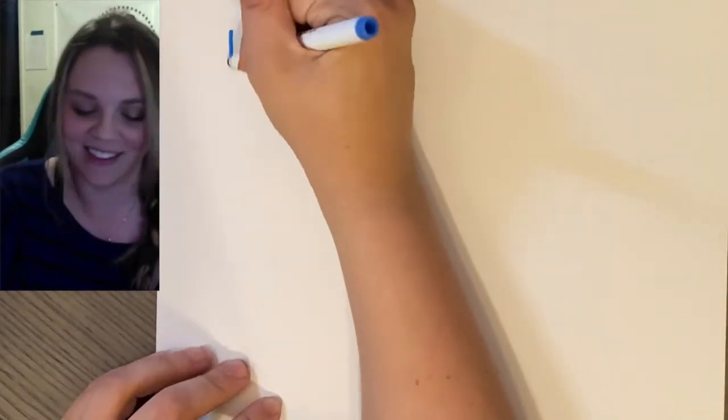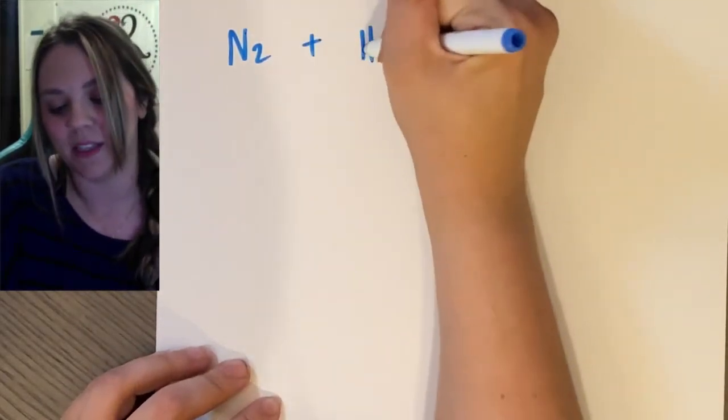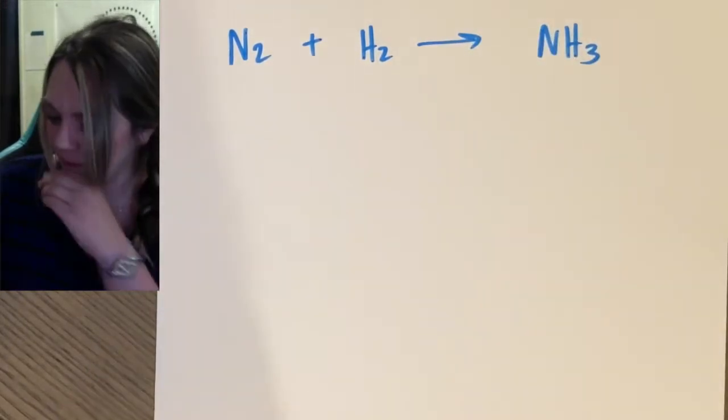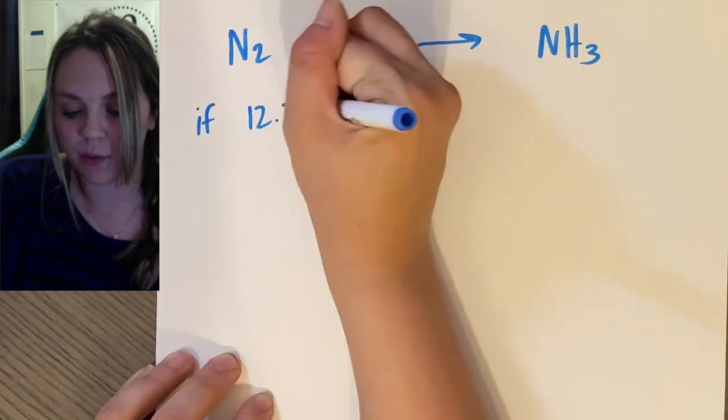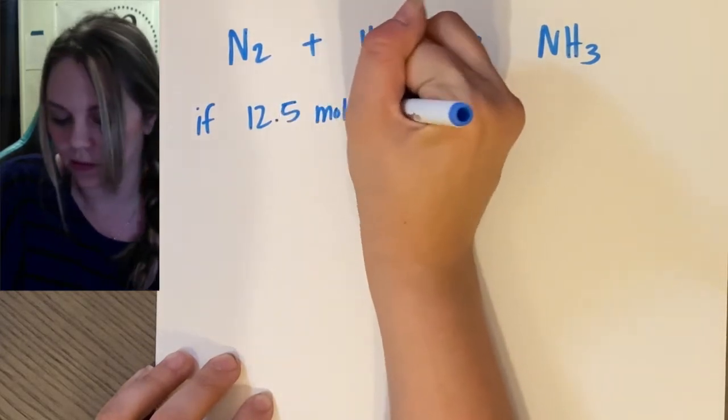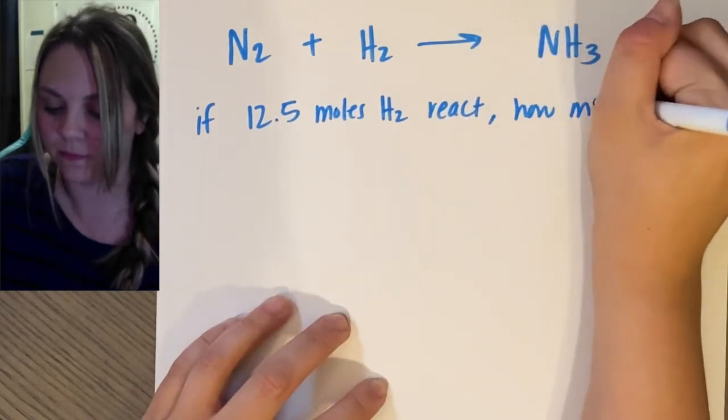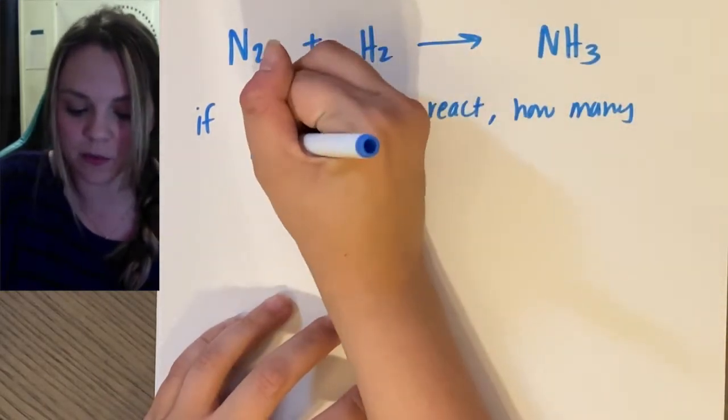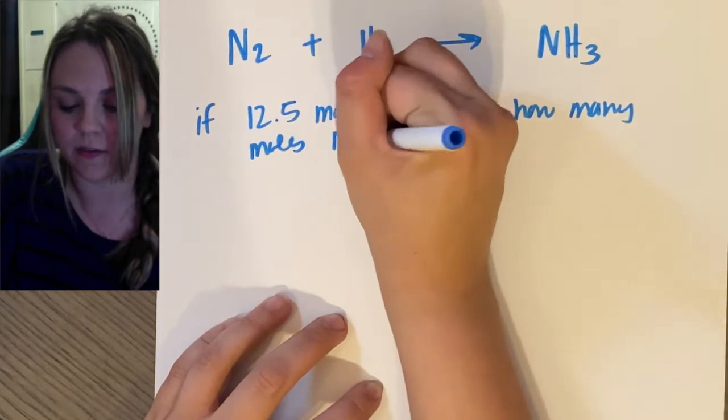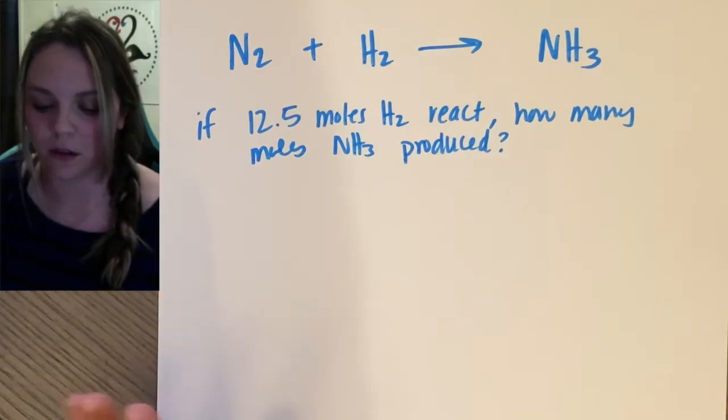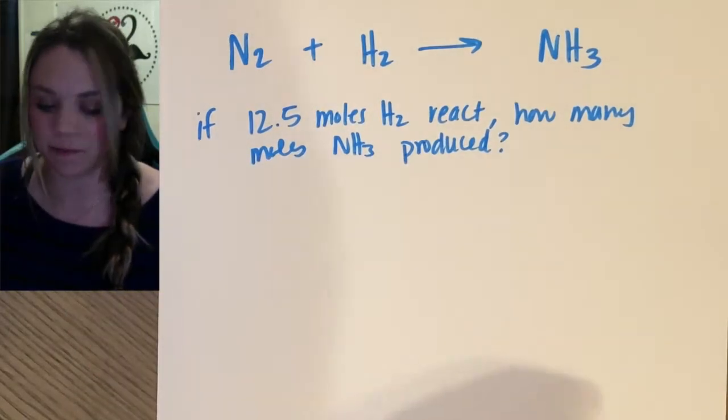So we use my favorite equation because it's easy. N2 plus H2 reacts to make NH3. If 12.5 moles of H2 react, how many moles of NH3 are produced? Okay, so I have an actual problem. Hooray. Step one, balance.